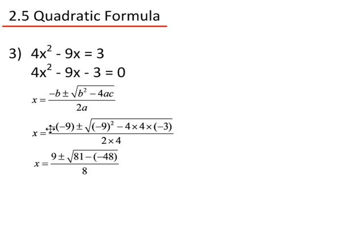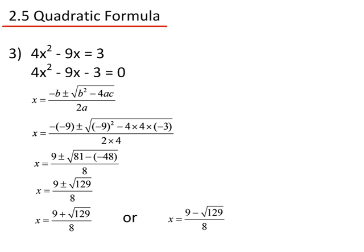Minus minus 9 gives positive 9. Minus 9 squared is 81. 4 times 4 times minus 3 is minus 48, and 2 times 4 is 8. 81 minus minus 48 gives 129 — so x equals 9 plus or minus the square root of 129, divided by 8. 129 has no square factors, so we have two solutions: x equals 9 plus √129 divided by 8, or x equals 9 minus √129 divided by 8.